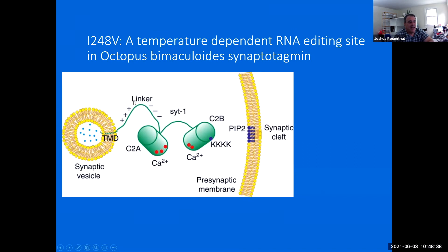We found a single edit, one editing site in the C2A domain that was edited about 20% of the time at 22 degrees, but 43% of the time at 12 degrees. Simple change, isoleucine to valine, a single methyl group is being removed. So in collaboration with Brian Sutton at Texas Tech, we crystallized both the edited and the unedited form.